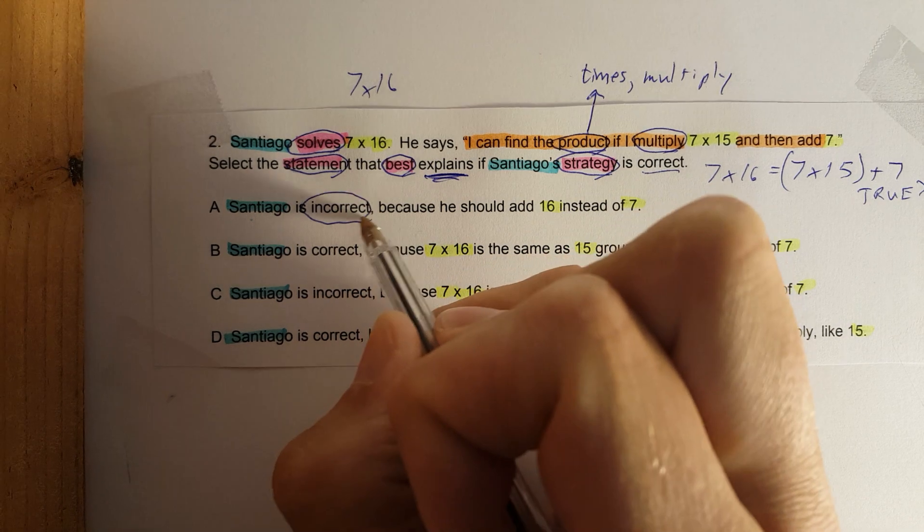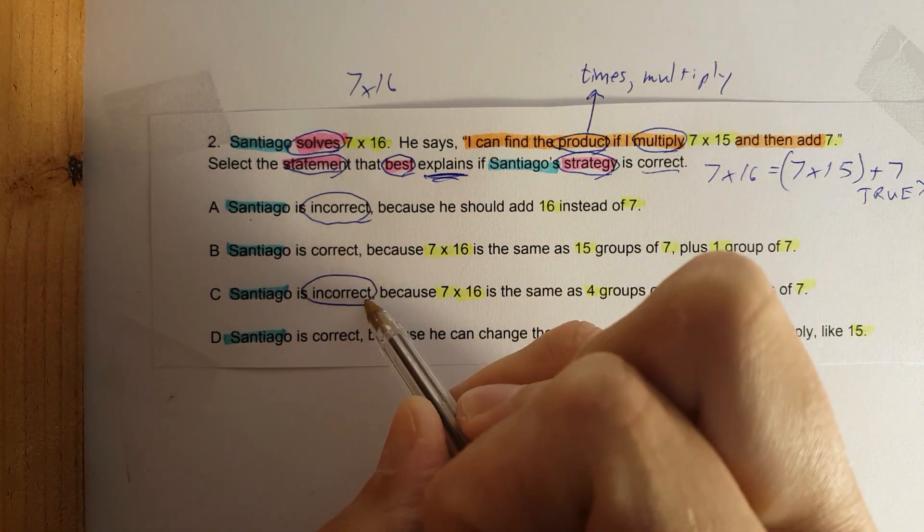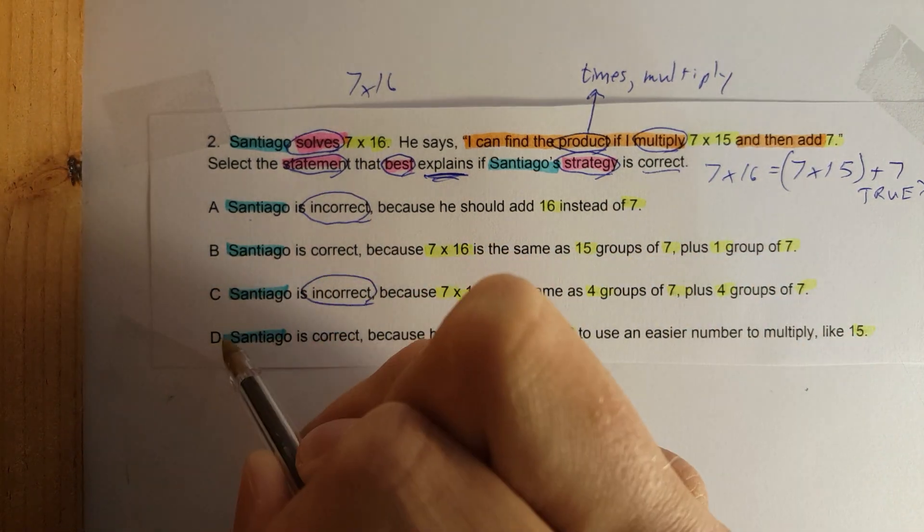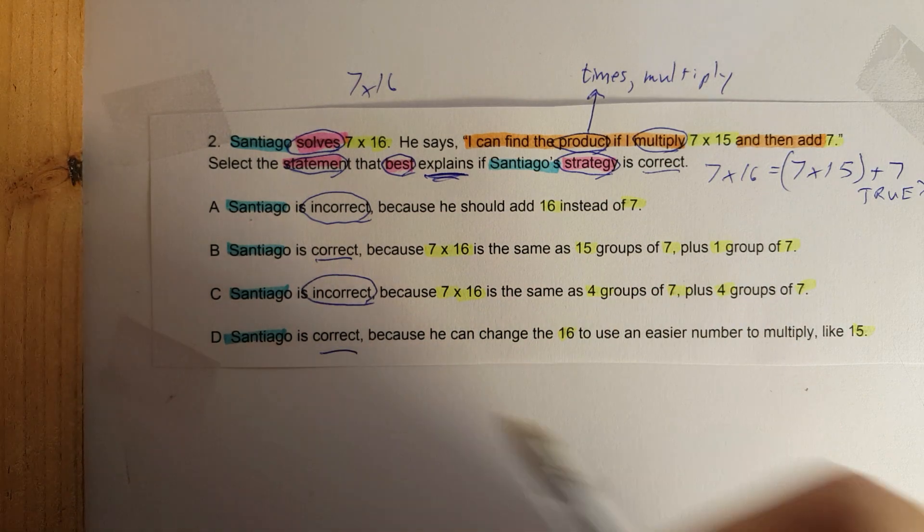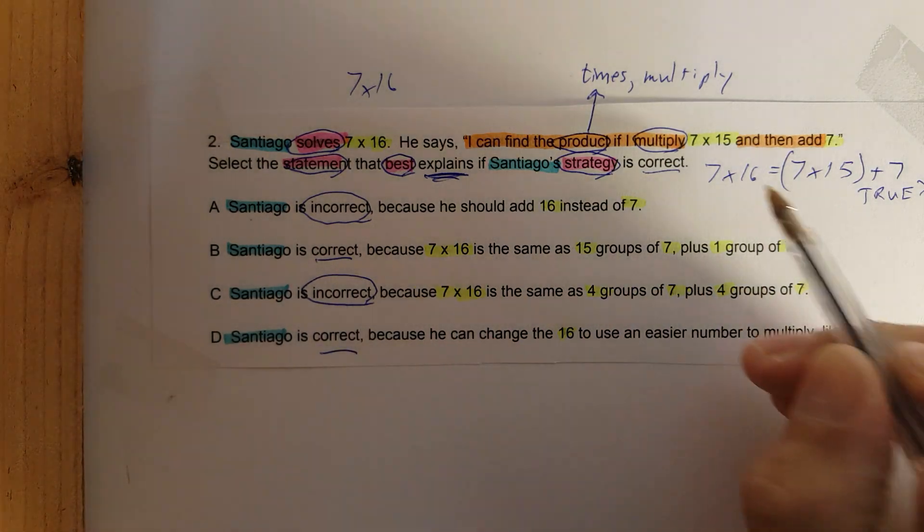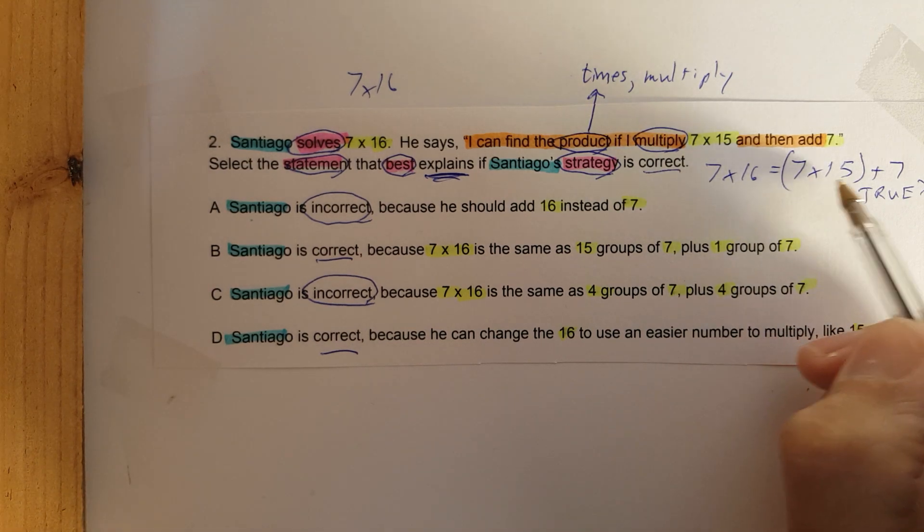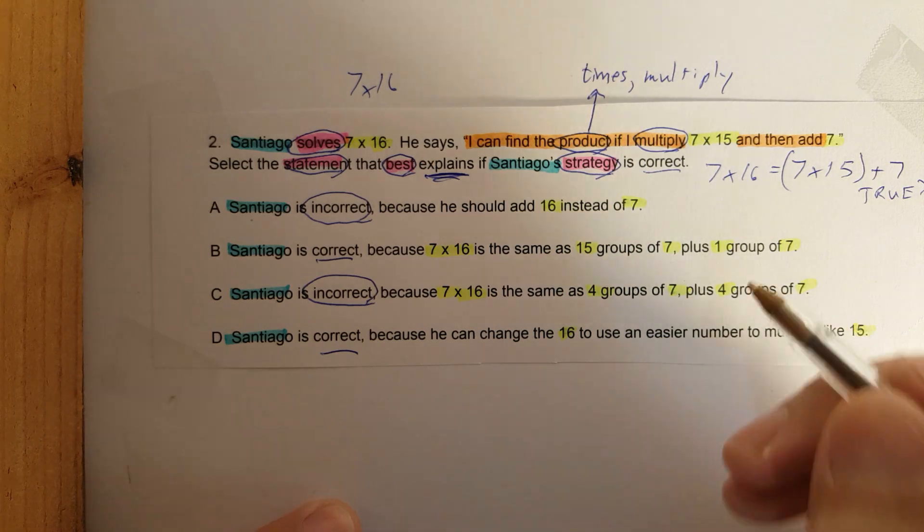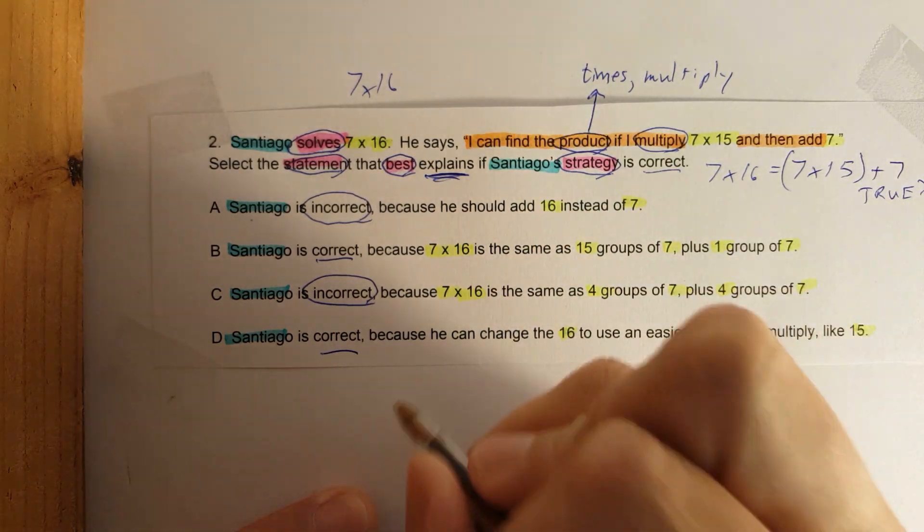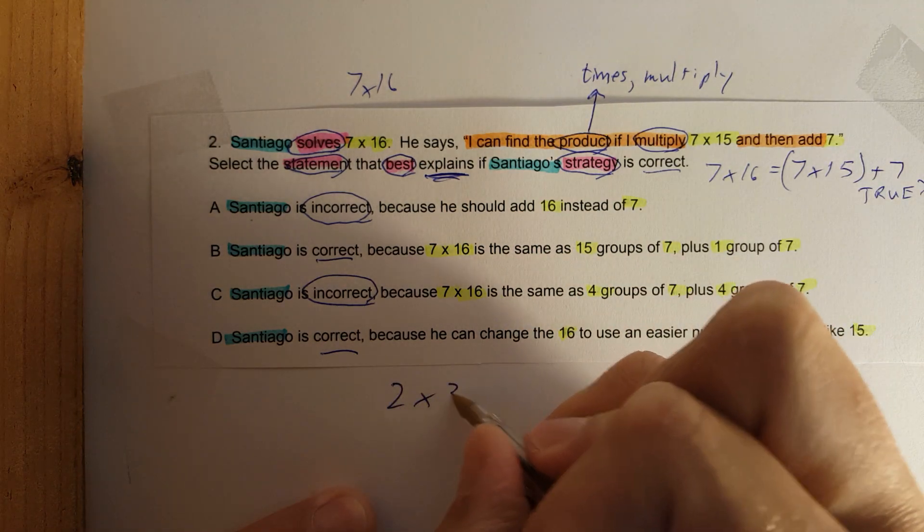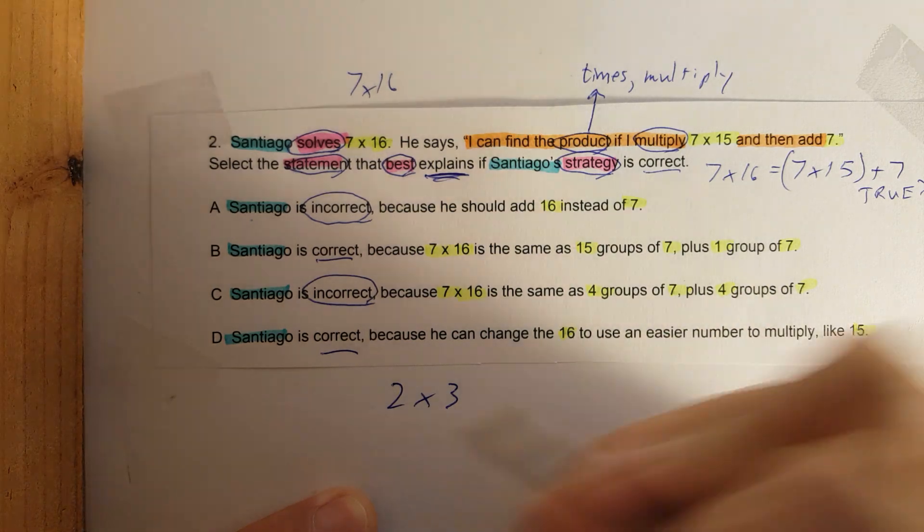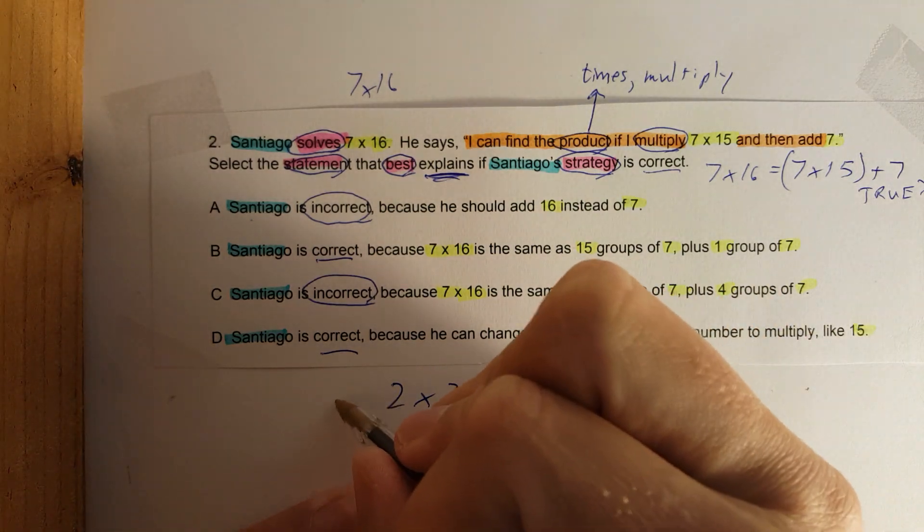Okay, first off we need to see if he's right. So notice how this one says incorrect, incorrect, incorrect, and then B and D say correct and correct. So right away, let's see if this is correct. 7 times 16 is equal to 7 times 15 plus 7. Okay, let's simplify this dramatically. Let's say we had 2 times 3. I'm just making up a scenario.